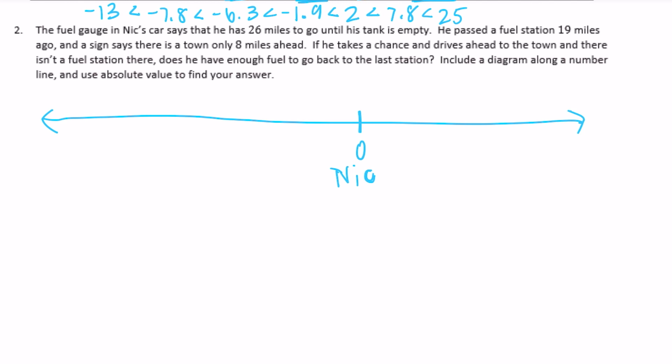Okay, so he passed a fuel station 19 miles ago. So 19 miles ago was the fuel station, and there's a town that's eight miles ahead of him. So about right here is next town.